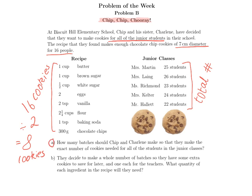We're at question A: how many batches should Chip and Charlene make so that they make the exact number of cookies needed for all of the students in the junior classes? This is the part where you will have to do some mathematical thinking — it's going to be a ratio. Ratio is a relationship between two numbers. One batch of cookies makes 16 cookies. Two batches makes 32 cookies — 16 doubled is 32. Three batches of cookies is three times 16: 32 plus 16 equals 48.